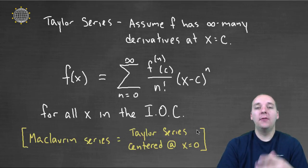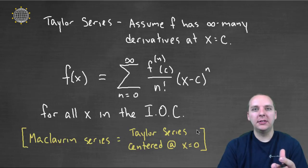So if your Taylor series is centered at four, that's not a MacLaurin series. But if it's centered at zero, then we call those guys in particular MacLaurin series. They're a specialized type of Taylor series.